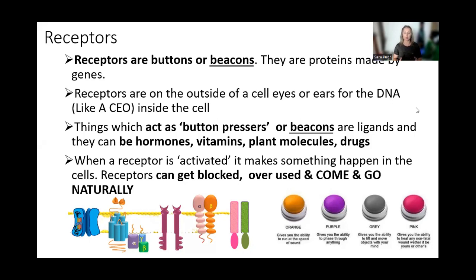Things which act as button presses or beacons are called ligands. We're using hormones as an example today, but vitamin D is also a ligand, as are many plant molecules, nutraceuticals, and pharmaceutical drugs. When receptors activate, they make something happen. Receptors can get blocked by the wrong ligand, or overused — causing them to be pulled back inside the cell, which is called downregulation. Importantly, receptors fluctuate and are not always present on the cell membrane.